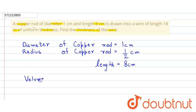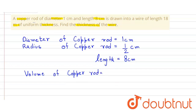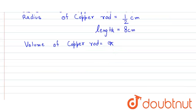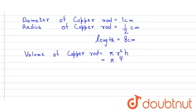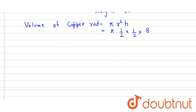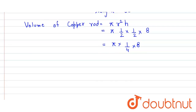The copper rod is in the shape of a cylinder, so the volume formula is pi r squared into h. That equals pi into (1/2) squared into 8, which equals pi into 1/4 into 8. The 4 cancels with 8 giving 2, so the volume of the copper rod is 2 pi centimeter cube.